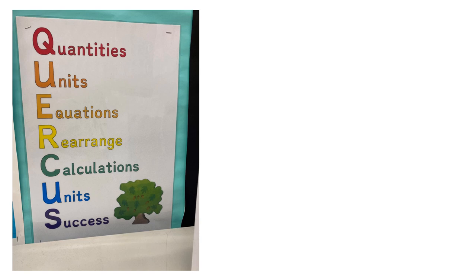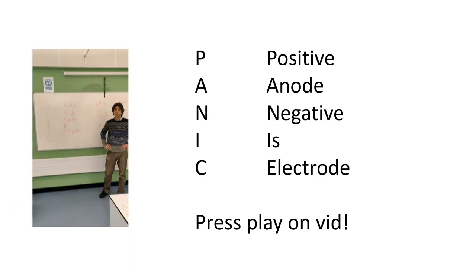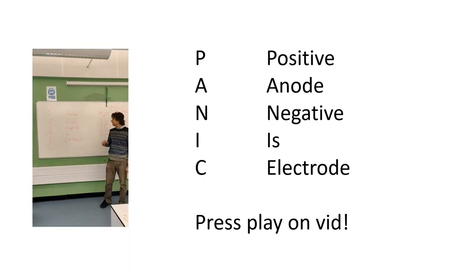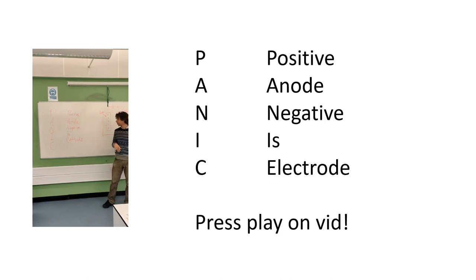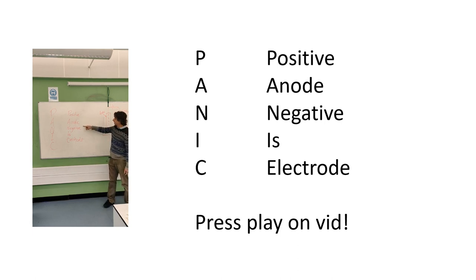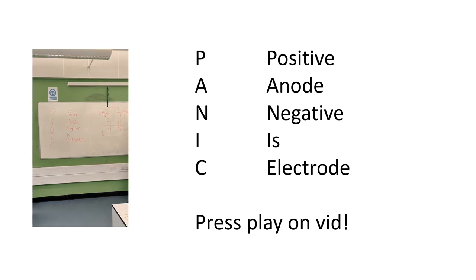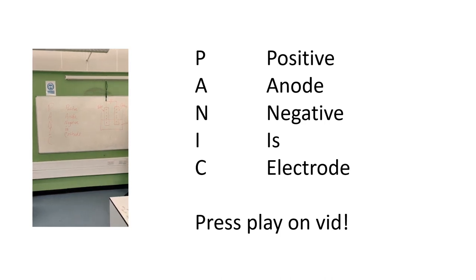Mr. Banks is going to talk you through another mnemonic acronym. This one is really important for Paper 1 Chemistry when using electrolysis: PANIC — Positive Anode, Negative Is Cathode. Once you've got that, you're able to answer any question about electrolysis.